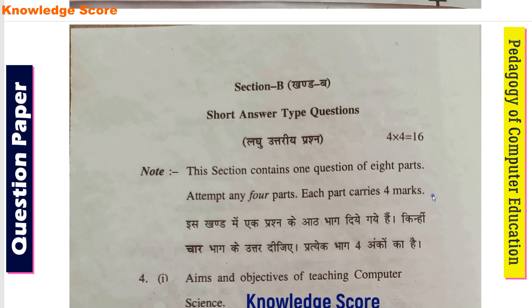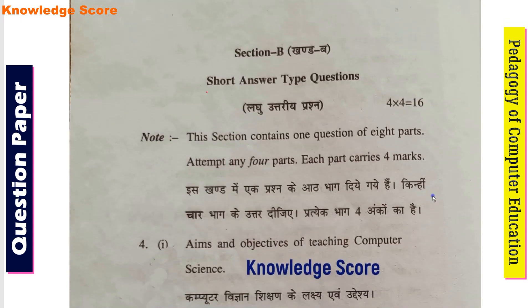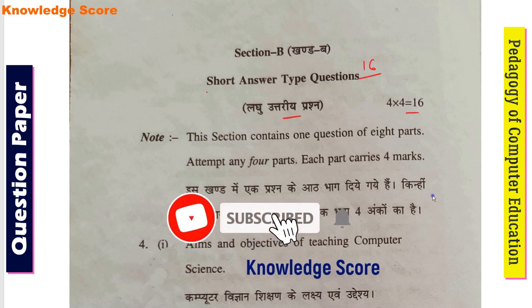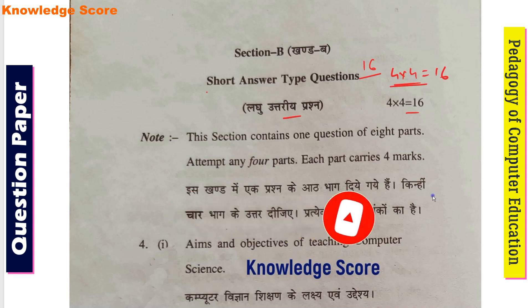Now, Section B — short answer type questions. The instruction says: this section contains one question of 8 parts, attempt any 4 parts, and each part carries 4 marks. So 4 into 4 equals 16 marks total for Section B.